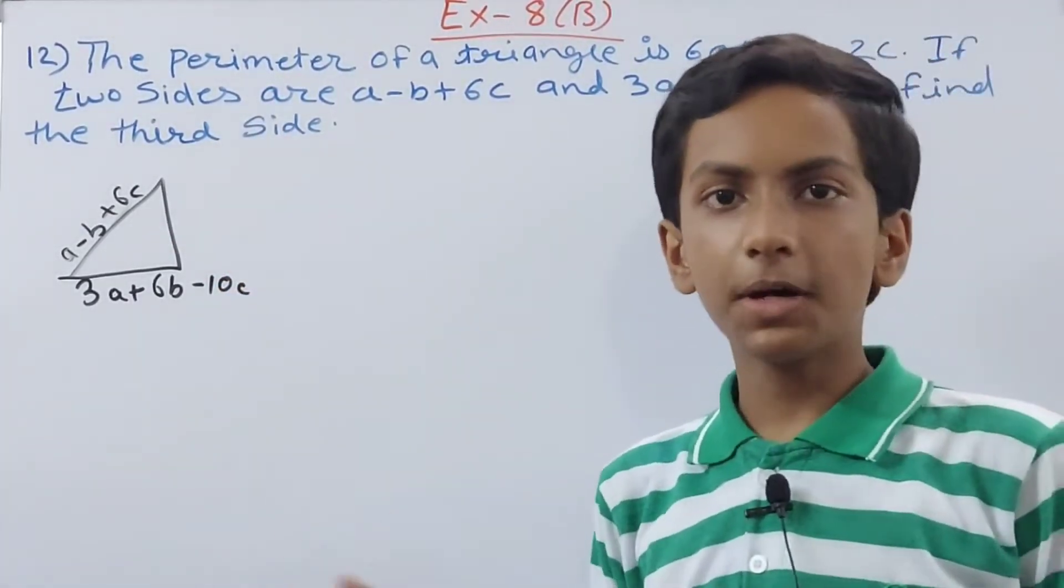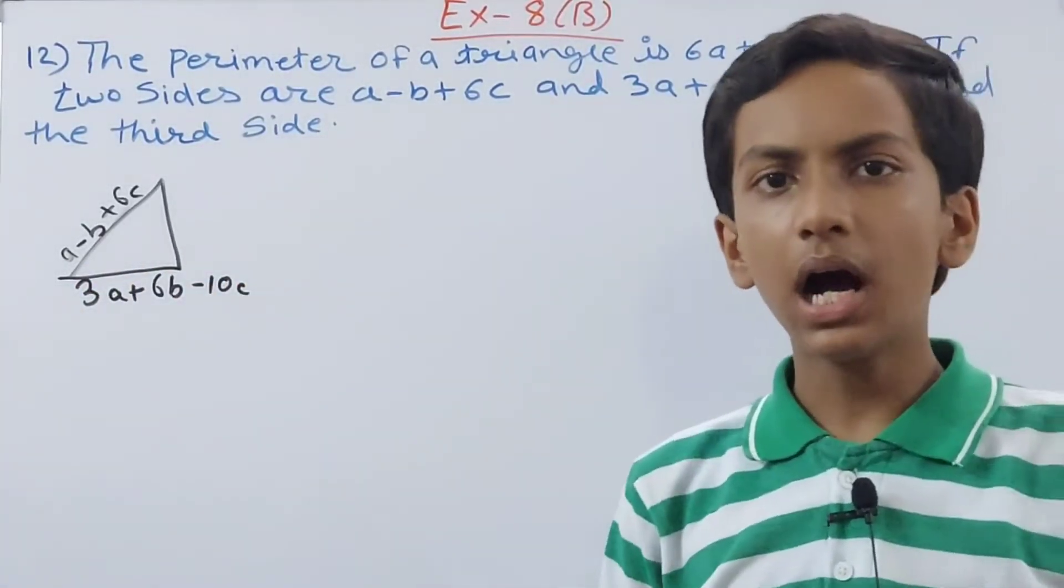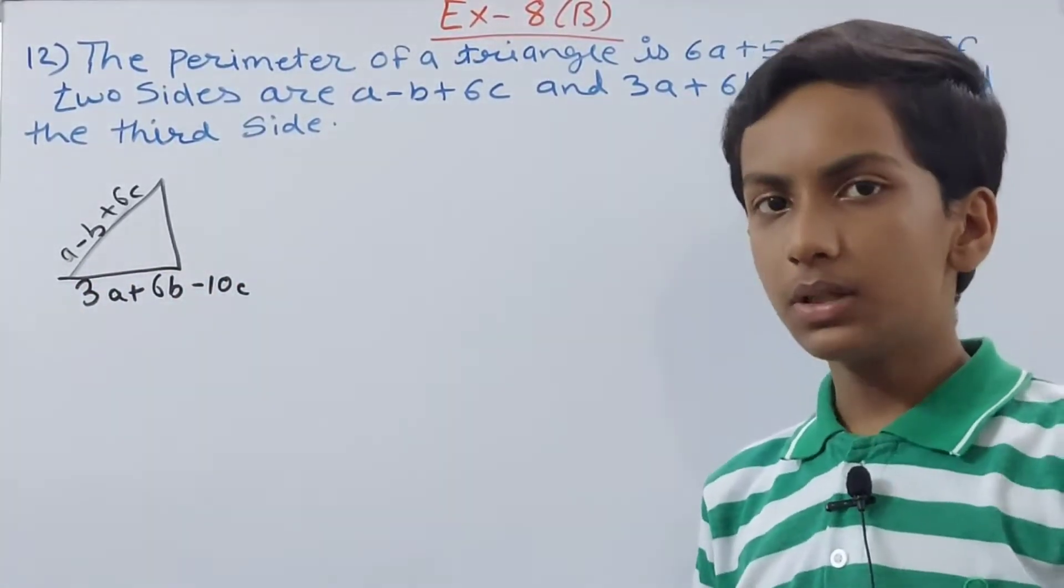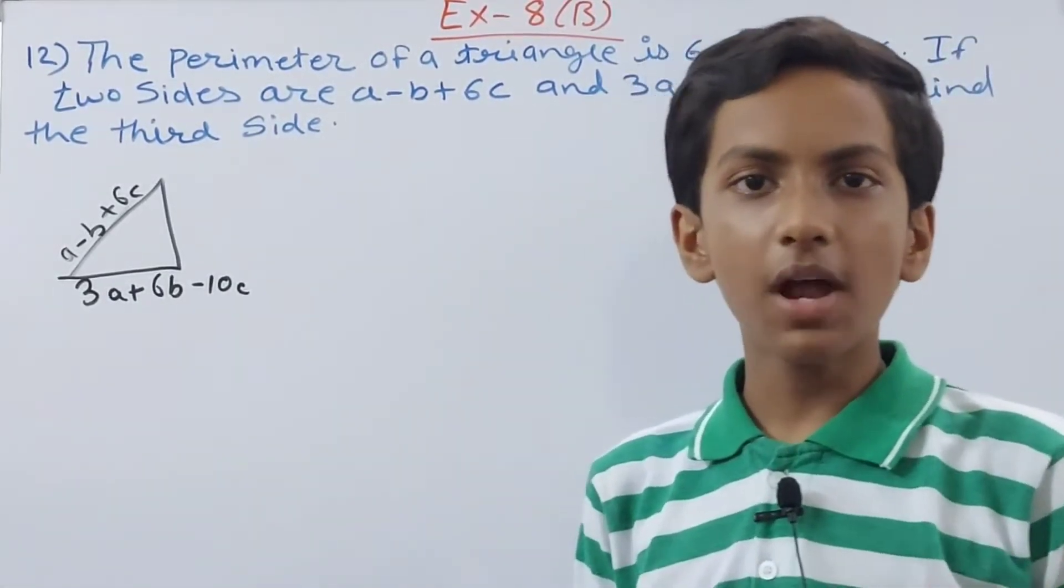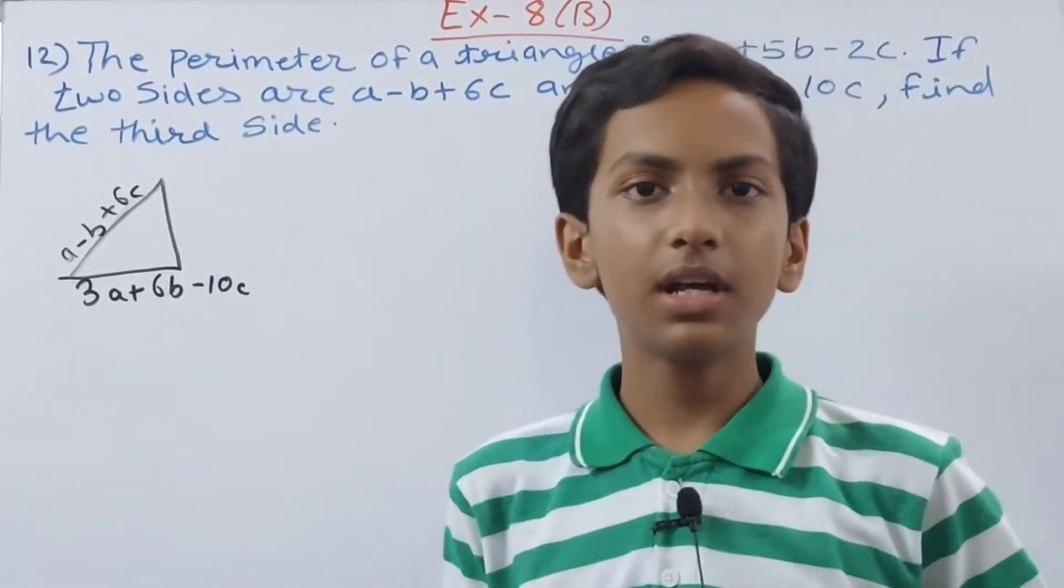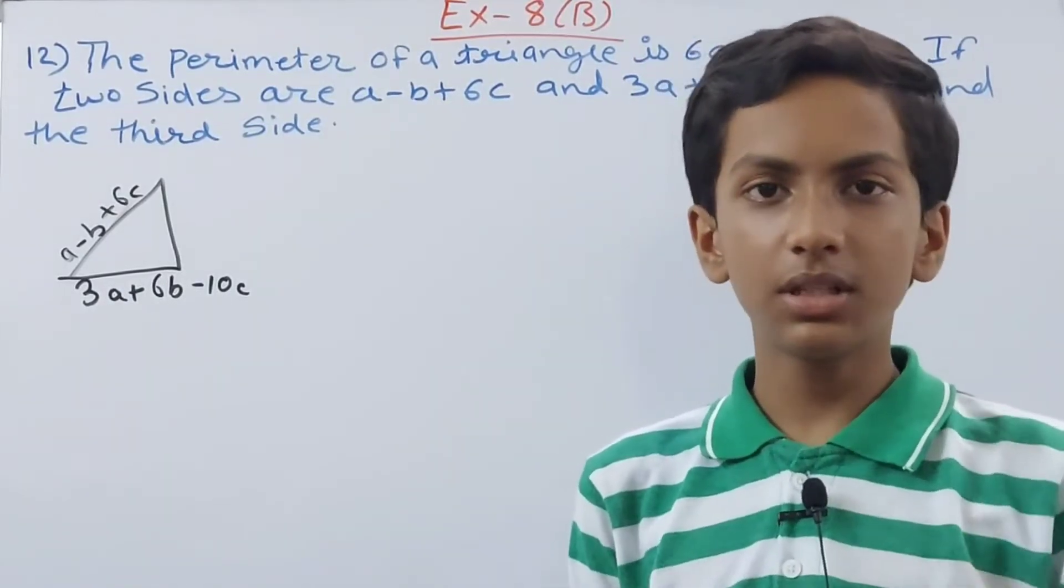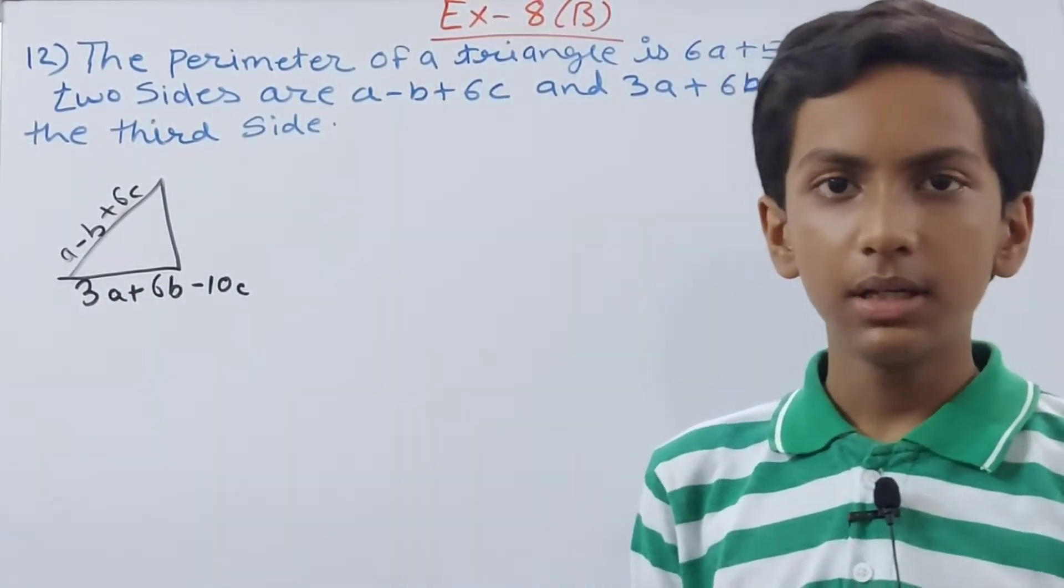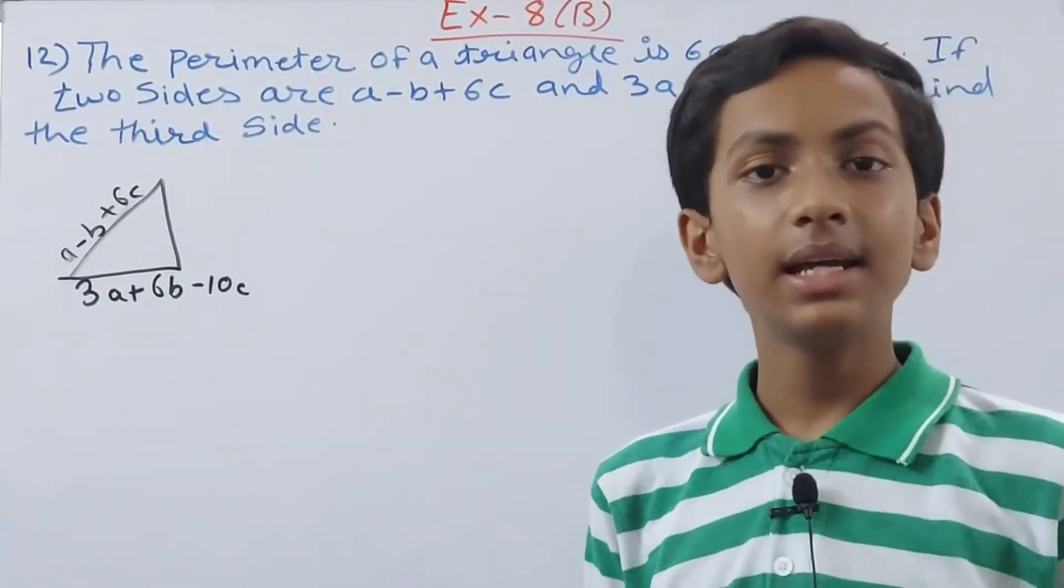Now how will we find the third side? Suppose you imagine that if the perimeter of a triangle is, let's say, 20 centimeters, and the two sides given are 5 and 15, what will be the length of the third side? For that we will add 10 and 5. That will give us 15.